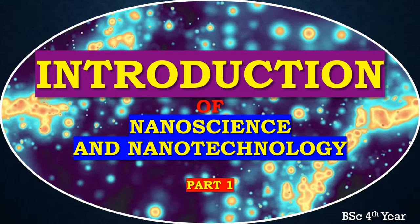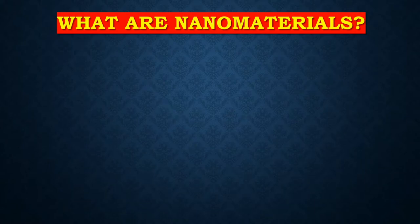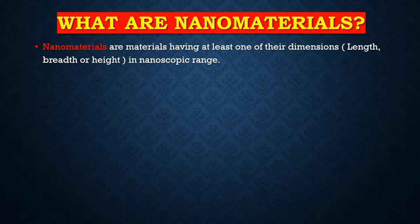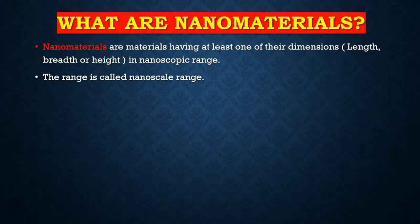The biggest question is: what are nanomaterials? Nanomaterials are materials having at least one of their dimensions — that is length, breadth, or height — in nanoscopic range. Nanoscopic range means the length between 1 to 100 nanometers. If any of the dimensions (along the x-axis, y-axis, etc.) is within 1 to 100 nanometers, those substances are called nanomaterials. That range is called the nanoscale range.